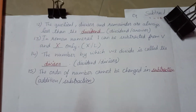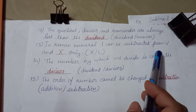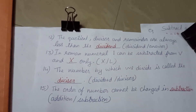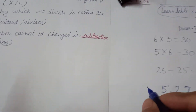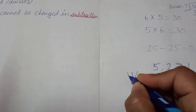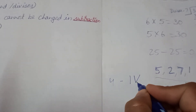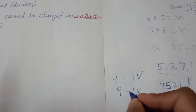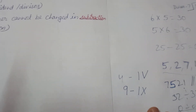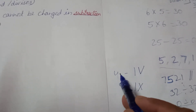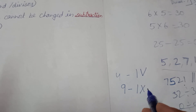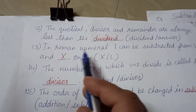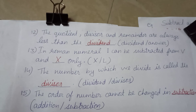The Roman numeral I can be subtracted from V and X only. I subtracted from V gives 4 (IV), and I subtracted from X gives 9 (IX). The numeral I cannot be subtracted from any other Roman numeral.